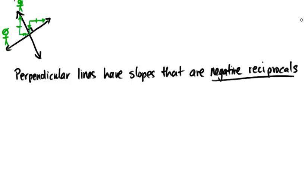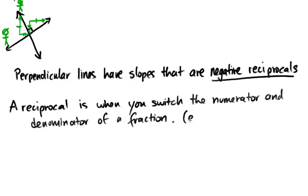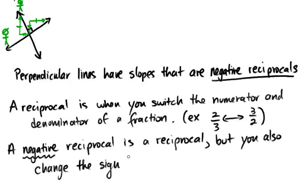A reciprocal is when you switch the numerator and the denominator of a fraction. For example, if you have 2 thirds, the reciprocal would be 3 over 2. That works the other way too — if you start with 3 over 2 and switch numerator and denominator, you get 2 over 3. A negative reciprocal is a reciprocal where you also change the sign: if it's positive it becomes negative, and if it's negative it becomes positive.